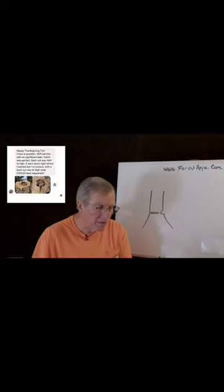He sent in a question: 50 foot tall tree with no significant lean, notch was perfect, back cut was way too high, went down right where I wanted it. With a back cut way too high, what could have happened?